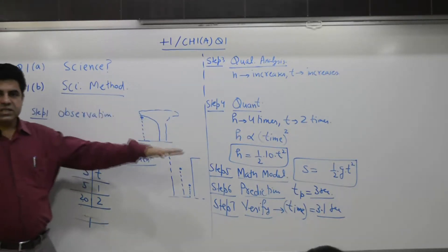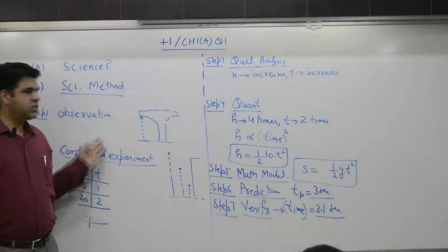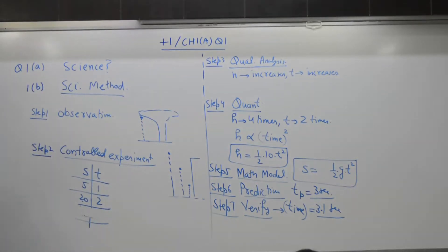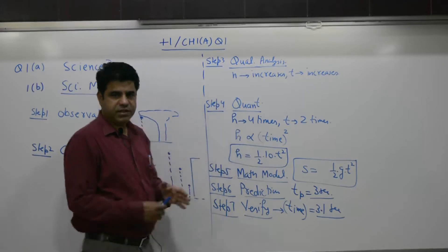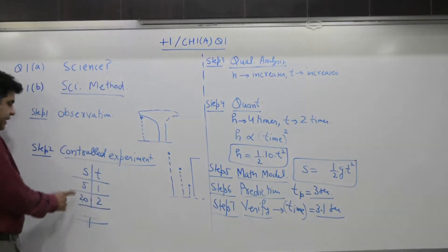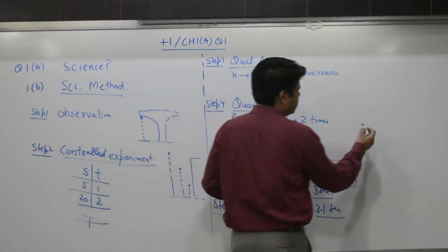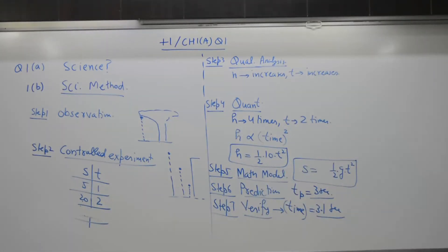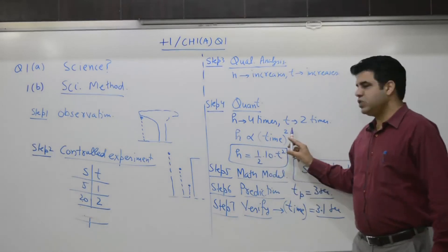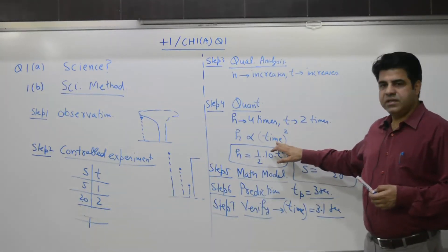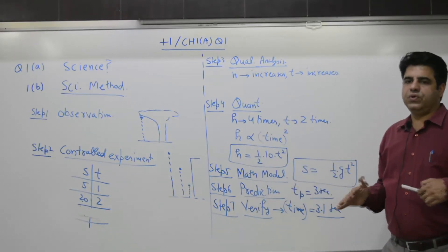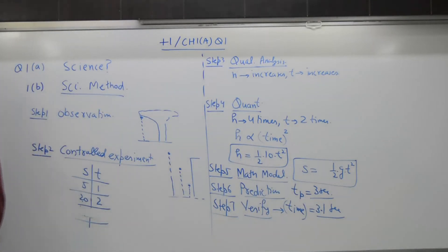So, how observation results in a formula: if H increases, time also increases. If you double the time, S becomes four times. If a scientist finds that T is two times and H is four times, then H is proportional to T squared. If T is three times, H is nine times. So the relationship between H and time: H is proportional to T to the power two.